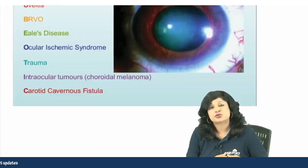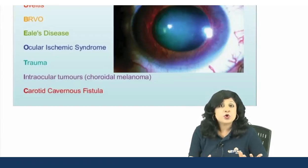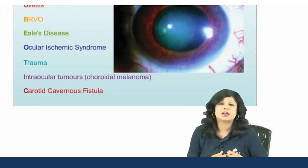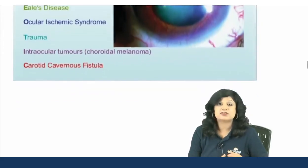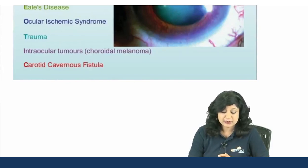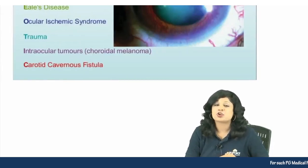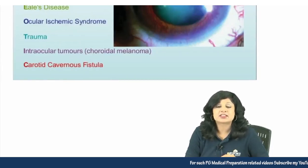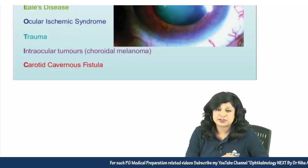Next is T for trauma, the most common known cause of vitreous hemorrhage. Then you have I for intraocular tumors — we can have choroidal melanomas — and C for carotid cavernous fistulas.